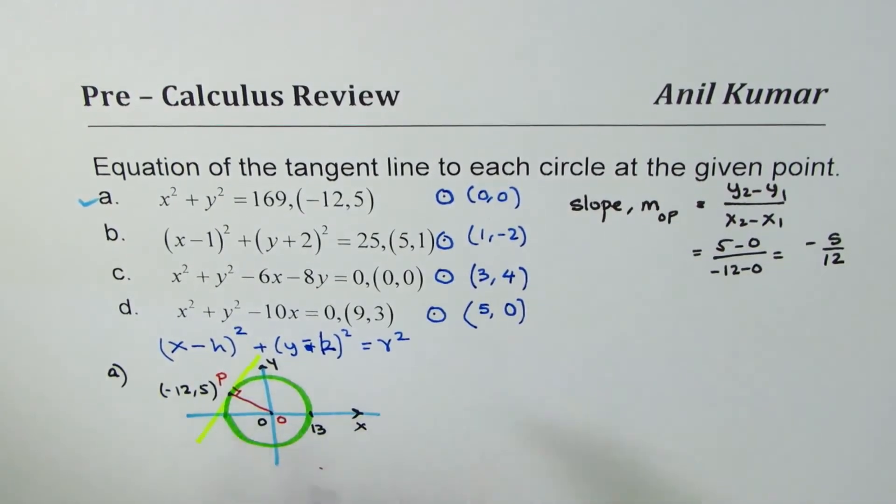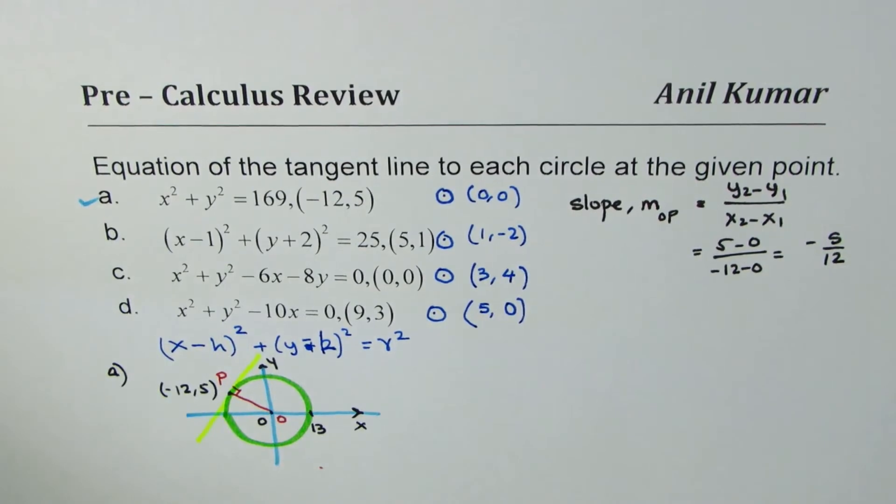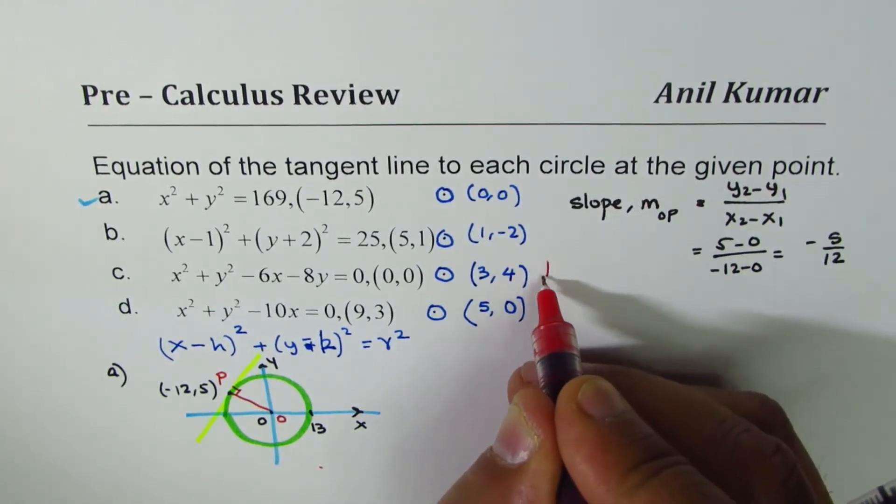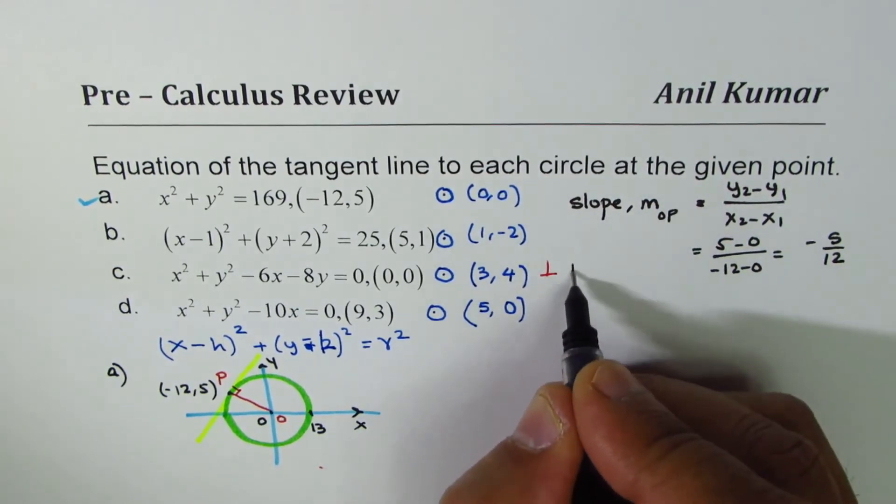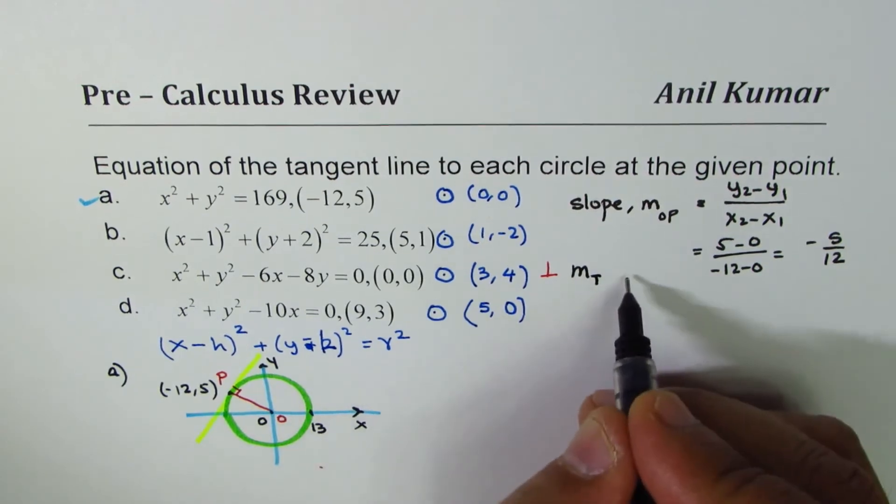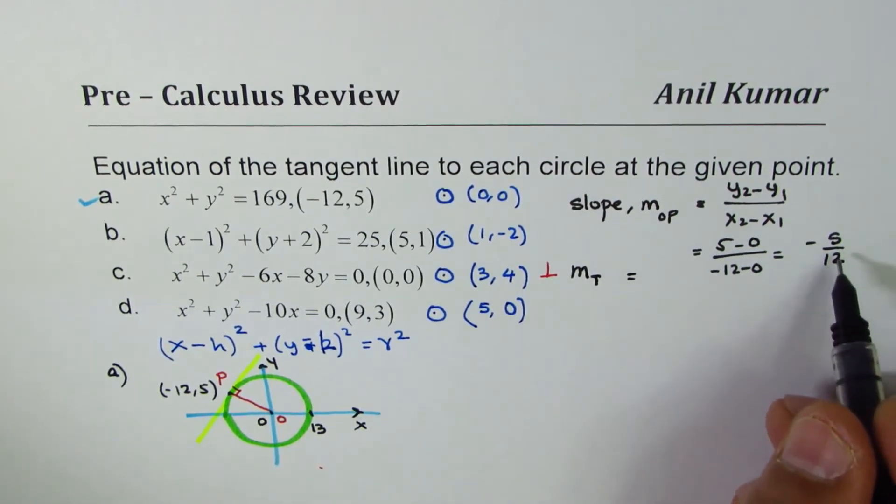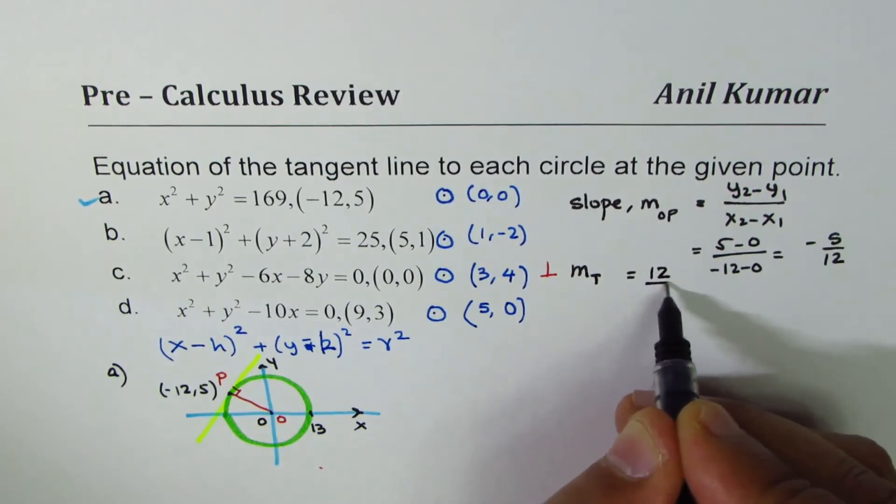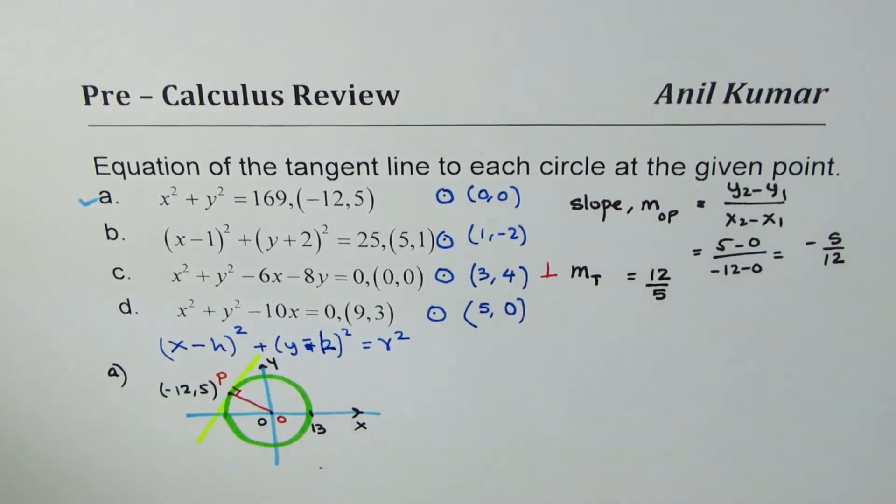Now, since we have a perpendicular, which is the tangent, slope of perpendicular—let me write Mₜ, the tangent—is going to be negative reciprocal. So negative becomes positive of this, and reciprocal means 12/5. So from here, we get slope of our tangent.